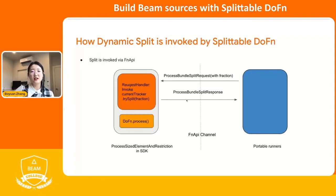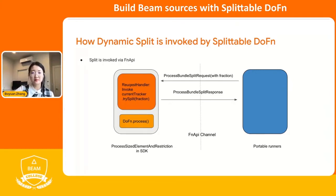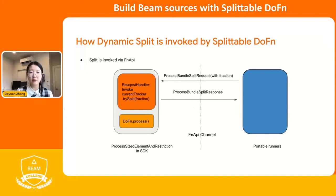The reason I don't put a code snippet here is that Kafka IO is a streaming source, so we don't have dynamic split there. The SDK harness and runner harness communicate such a split via the portable execution API channel. During execution time, the portable runners compute a split decision and send it with a process bundle split request to the SDK. When the SDK gets the split decision, it tells the current tracker to split at the fraction the runner provides and sends back the residuals with a process bundle split response to the runners. The runner will look into the response and reschedule the residuals.